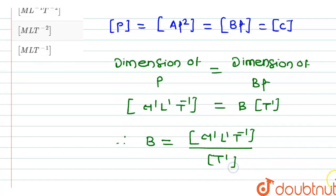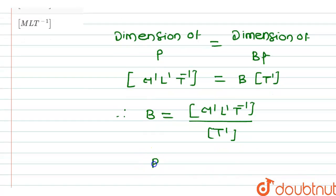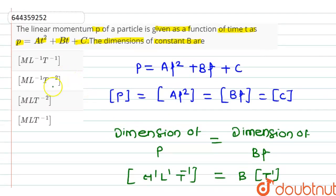So here the dimensions of b will be equal to m1, l1, t minus 2. So here the correct answer for our question is option c, m1, l1, t minus 2 will be the dimension of b. Thank you.